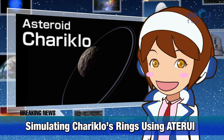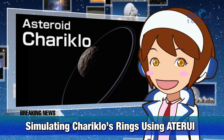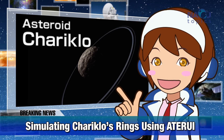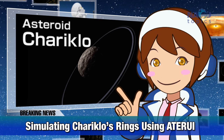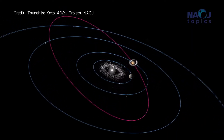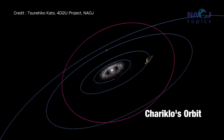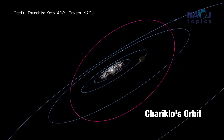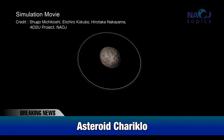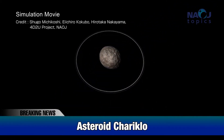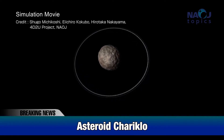NAOJ's dedicated astronomy supercomputer, Aterui, simulated the rings around the asteroid Chariklo. Chariklo is one of the centaurs — asteroids located between Jupiter and Neptune. It is famous as the asteroid with rings, but the detailed structure and evolution of the rings were not known.